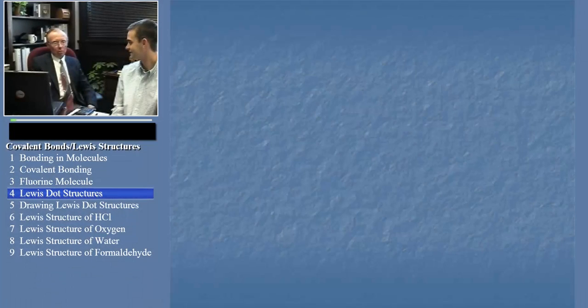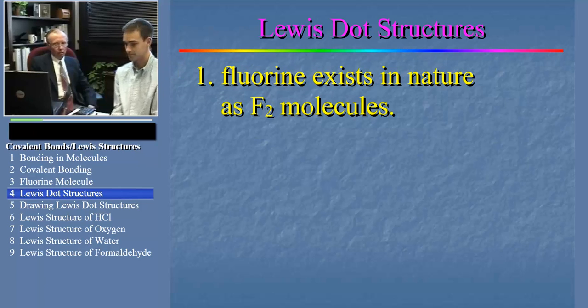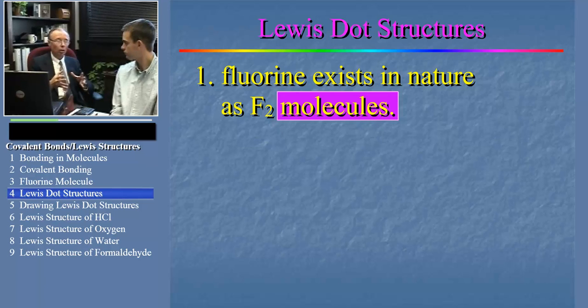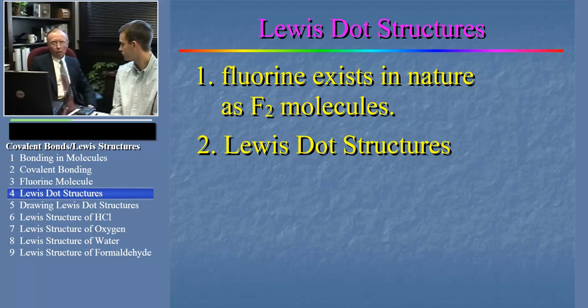So in the process of describing the bonding of one fluorine atom to another, we've accomplished a couple of important things, Bracken. What are they? We've predicted how fluorine really exists in nature as an F2 molecule. Right. And in fact, it's important to remember that when atoms bond together this way, they form what's called a molecule. And what's the other one? We've learned how to draw Lewis dot structures for molecules. That's right.